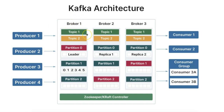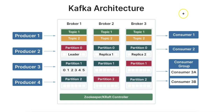Number three, we have brokers. Kafka brokers are the servers that store the data and handle client requests for producing and consuming messages. A Kafka cluster typically consists of multiple brokers to provide fault tolerance and scalability. Each broker holds partitions for different topics, is identified by a unique ID, and is responsible for managing data persistence on disk and serving data to consumers.